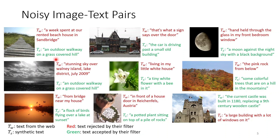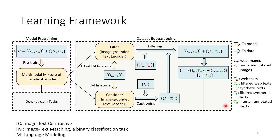But sometimes the synthetic caption is worse. For example, in this case: for this image, this is the original caption, and this is the synthetic caption. If we ask humans to judge which one is better, then the original one is better — it has more details and is more precise. But this is a relatively rare case. Therefore, in this situation they need to train several network architectures together.